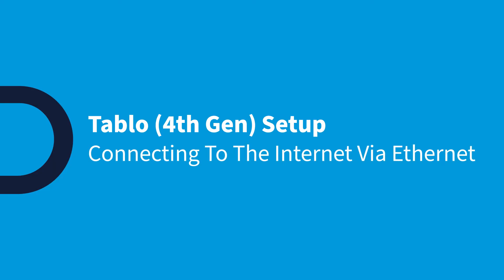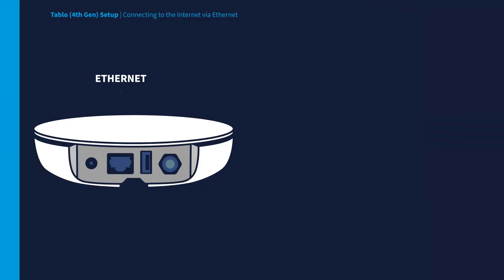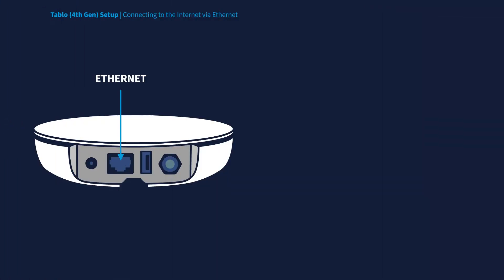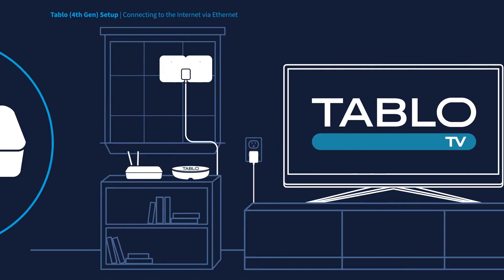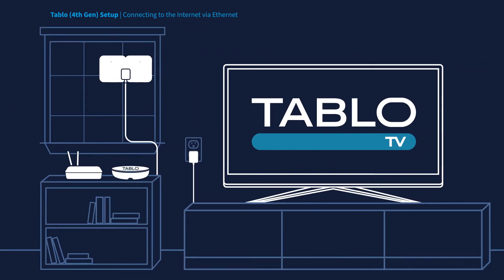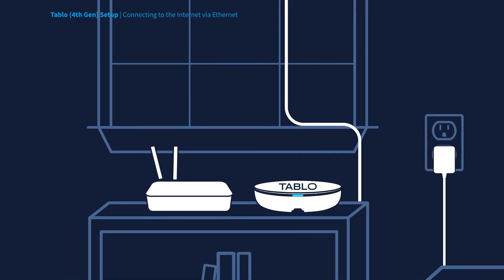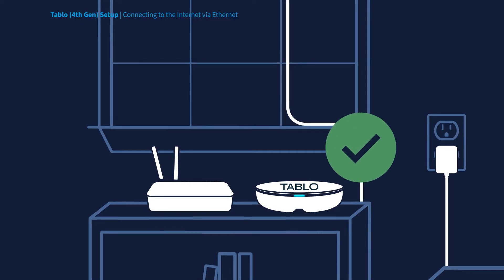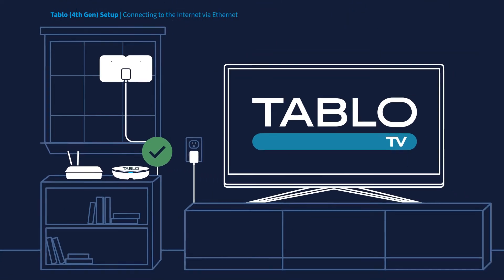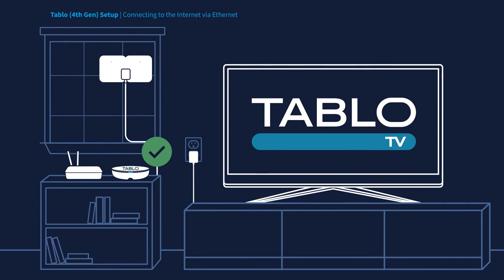To connect Tableau to the Internet via Ethernet, simply ensure one end of the included Ethernet cable is connected to your Tableau's Ethernet port, and the other end is connected to your home router. Once your Tableau is connected via Ethernet and powered up, simply wait for the blue LED light on the Tableau device to stop blinking and become solid. Your Tableau should now be connected to your home network.